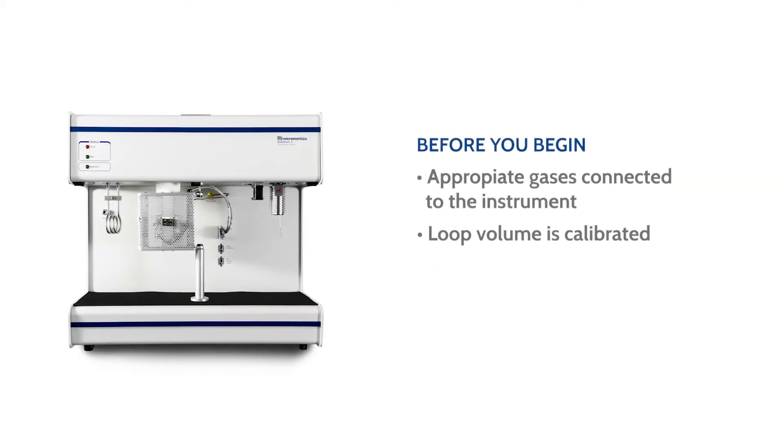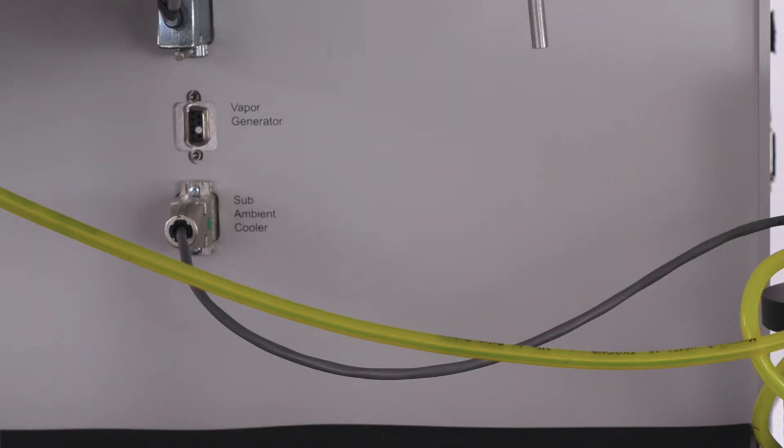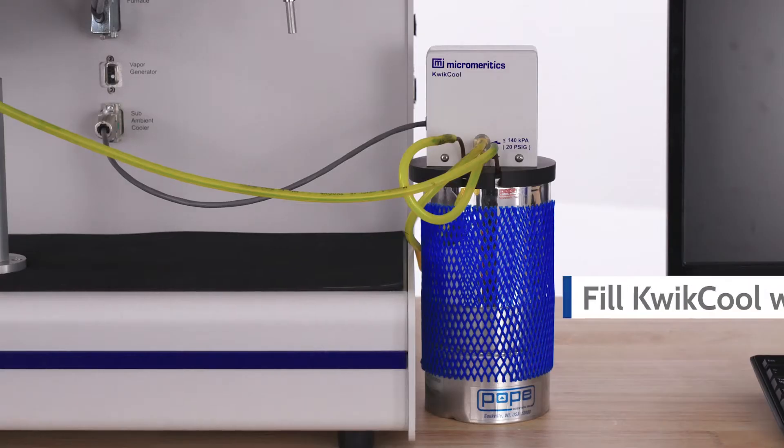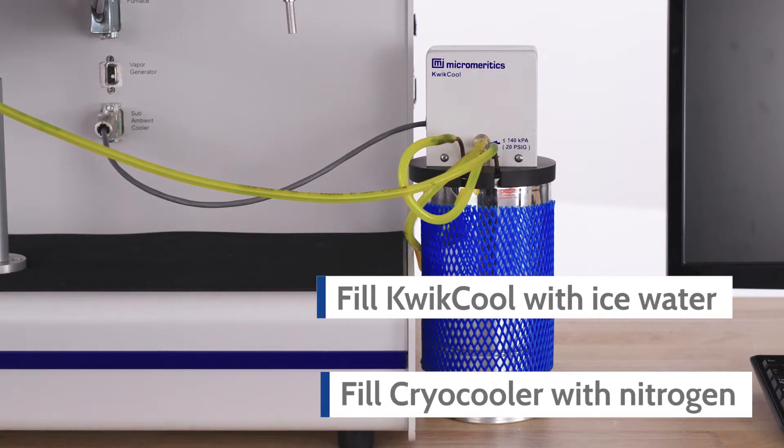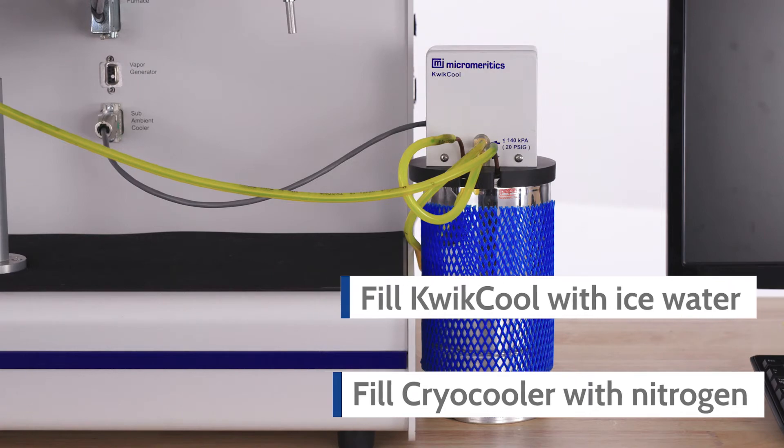And last, make sure a cooling system is connected to the instrument. This can be either the quick cool or cryo cooler. A cooling system can be connected to the instrument with a 9-pin D-cable. Verify the quick cool is sufficiently filled with ice water or the cryo cooler with liquid nitrogen before starting the analysis.